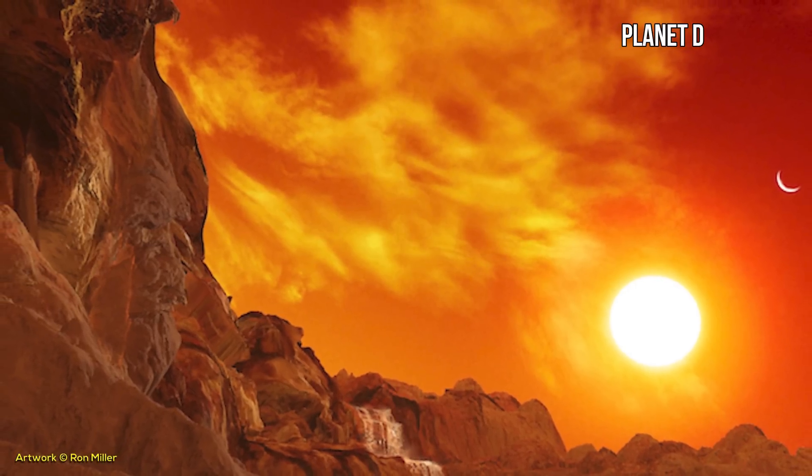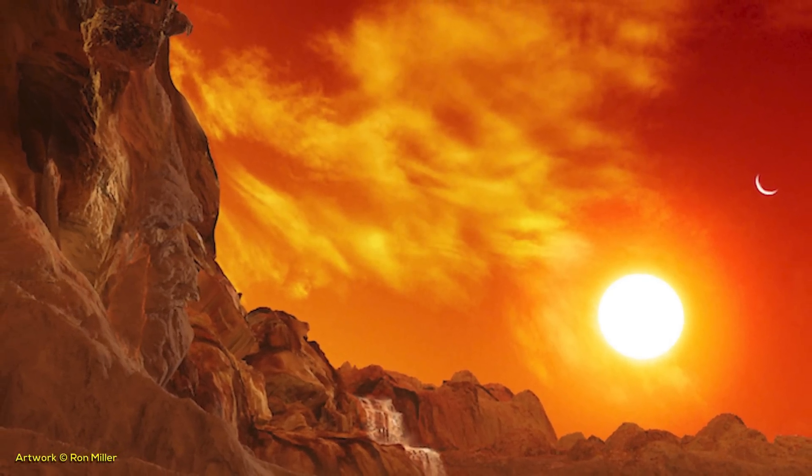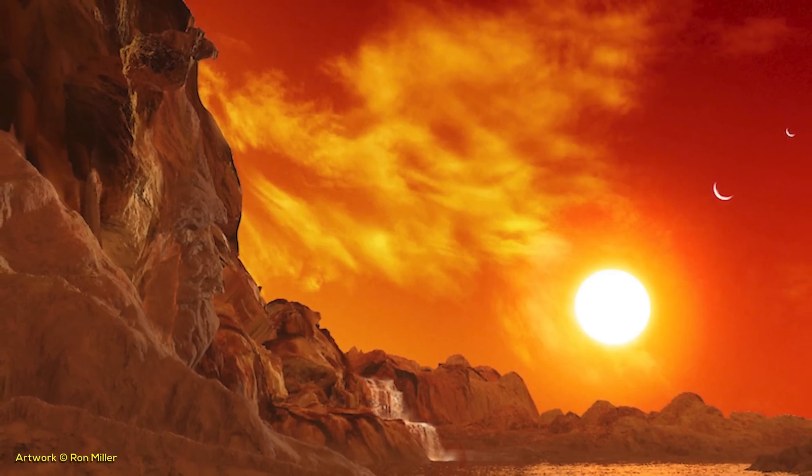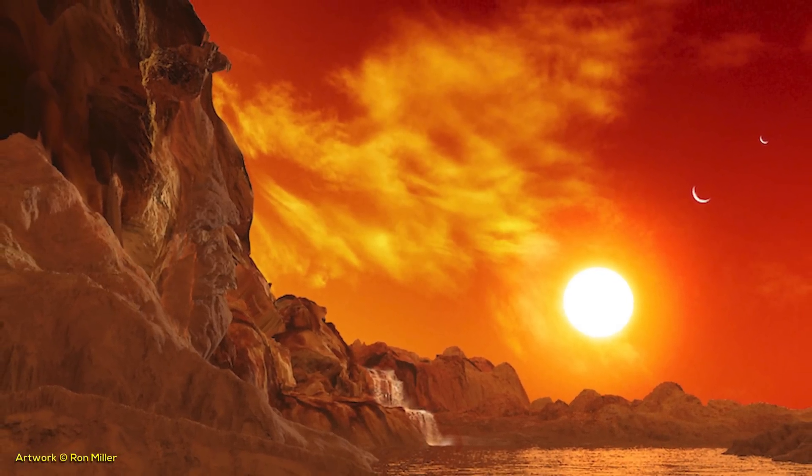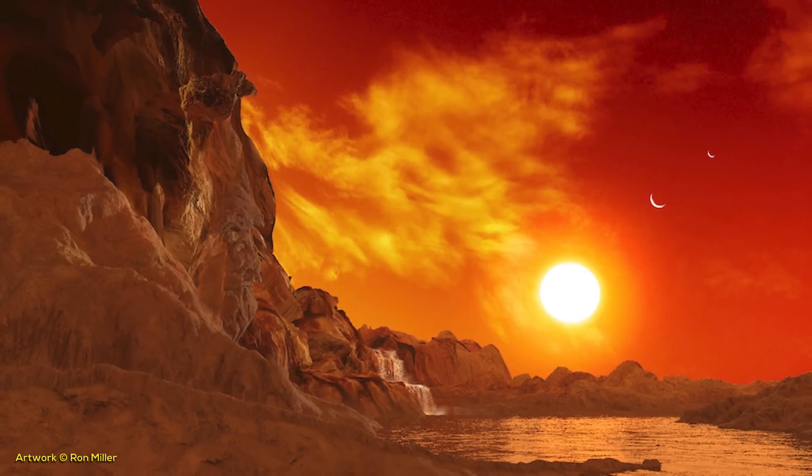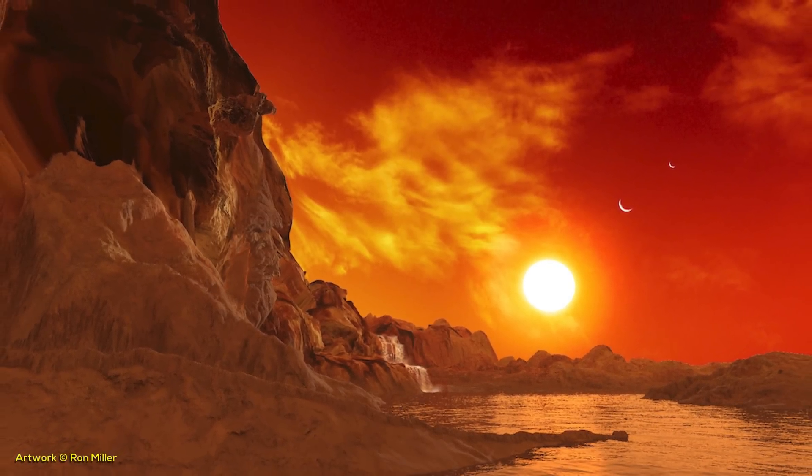Planet D, on the other hand, would only have a limited area along the terminators where vegetation could develop, and the maximum temperatures of the daytime side and minimum temperatures of the hemisphere always in the dark would be much more extreme than on TRAPPIST-1E.